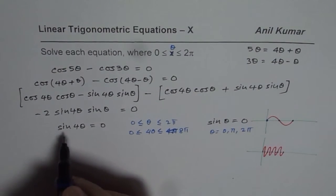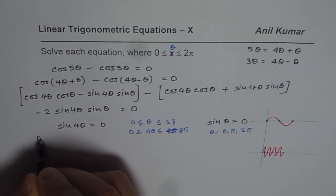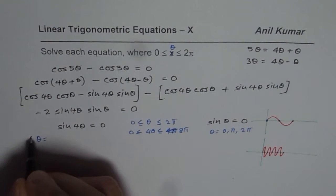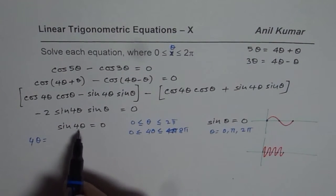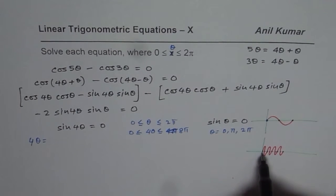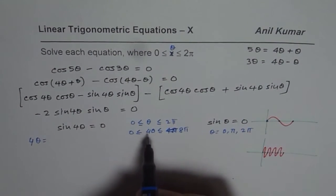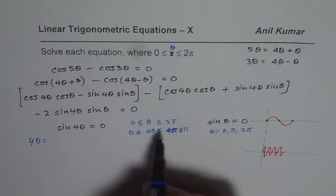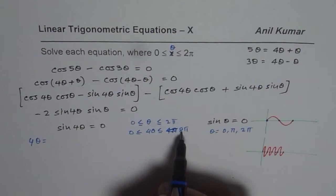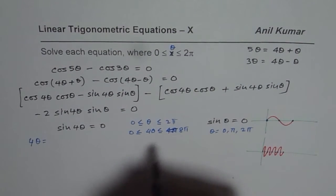So the answers for this will be 4θ equals to... I should write 4θ. Because the period for this becomes one-fourth. Do you understand this part? So we have to write the 4θ value till 8π.